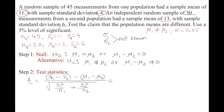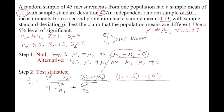Even though the sample sizes are large, we cannot use the z-test because population standard deviation is not known. We have everything we need — means, standard deviations, and sample sizes. Substituting: (11 − 13) − 0, since we assume μ₁ − μ₂ = 0 under the null hypothesis.